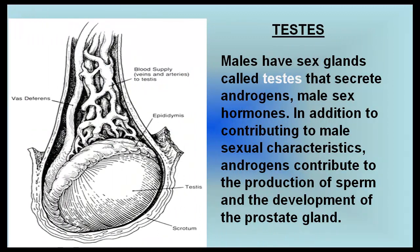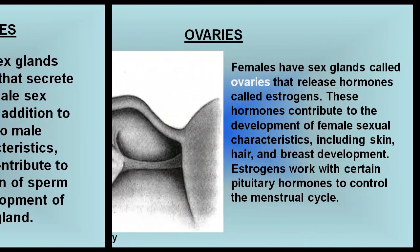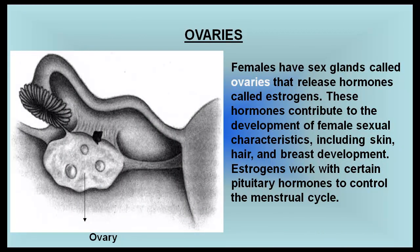Males have sex glands called testes that secrete androgens, the male sex hormones. In addition to contributing to male sexual characteristics, androgens contribute to the production of sperm and the development of the prostate gland. Females have sex glands called ovaries that release hormones called estrogens. These hormones contribute to the development of female sexual characteristics, including skin, hair, and breast development.